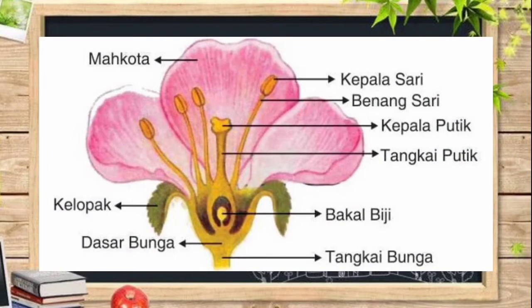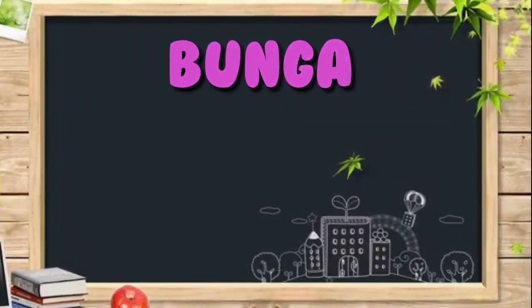Ada beberapa bagian bunga yang dapat menghasilkan sel-sel kelamin yang diperlukan untuk proses perkembangbiakan tumbuhan secara generatif. Bagian tersebut berada pada putik dan benang sari. Yang mana putik sebagai sel kelamin betina, sedangkan benang sari sebagai sel kelamin jantan.